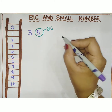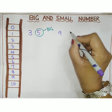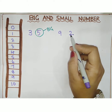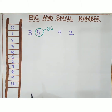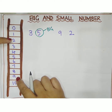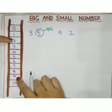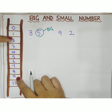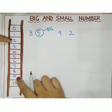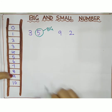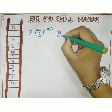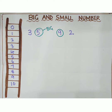Take one more example. If I write 9 and 2, we have to compare these two numbers to find out which is small and which is big. 2 is here and 9 is here. When we move forward from 0, 2 comes first, which means 2 is the small number. 9 comes later, so 9 is the big number. I will circle 9.